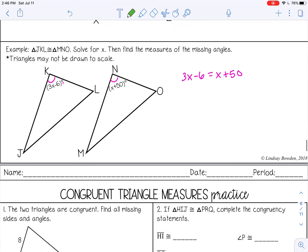I'm going to start by subtracting x from both sides. 3x minus x is 2x. Then I'll add 6 to both sides. 2x equals 56, and then divide both sides by 2, so x equals 28.